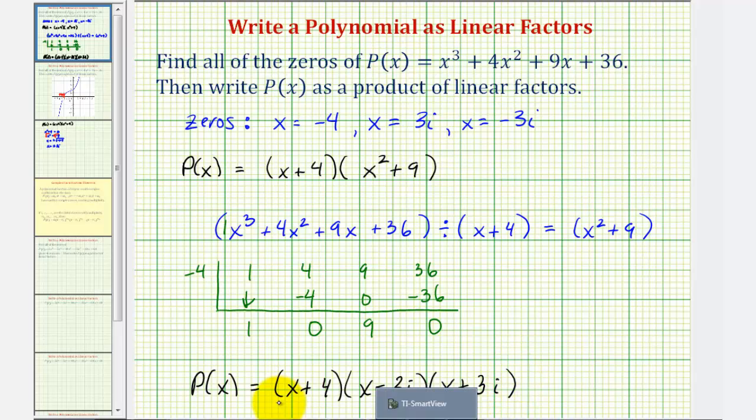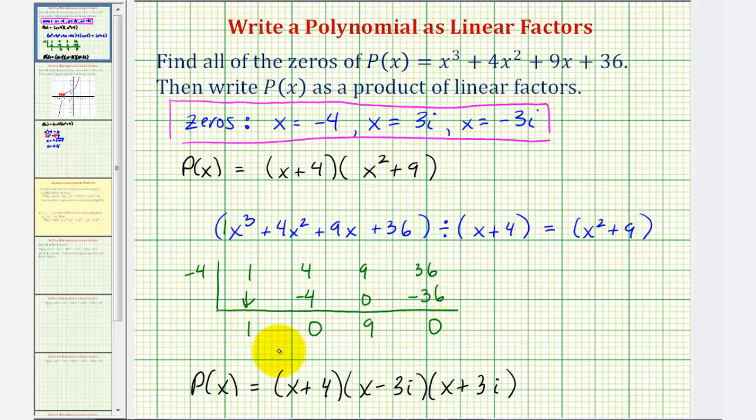Again, each of these factors is x minus the zero of the polynomial function. So now we have everything. We found the zeros and we also wrote the polynomial as a product of linear factors. I hope you found this helpful.